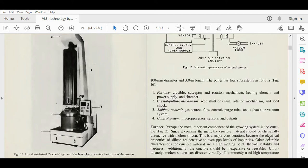Other desirable characteristics for crucible material are high melting point, thermal stability, and hardness, because the temperature around the crucible has to be in thousands of degrees centigrade. Additionally, the crucible should be inexpensive or reusable.